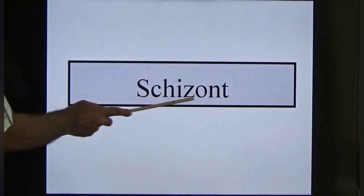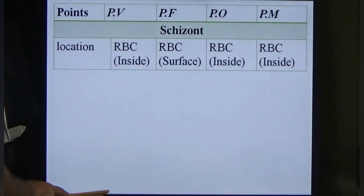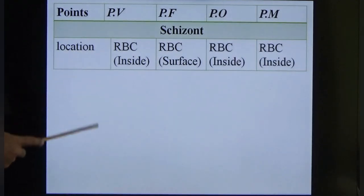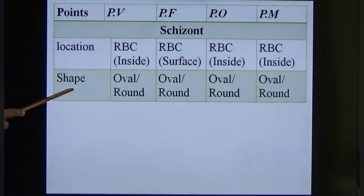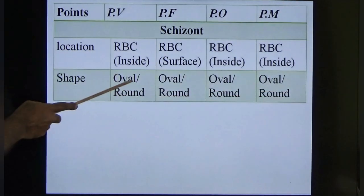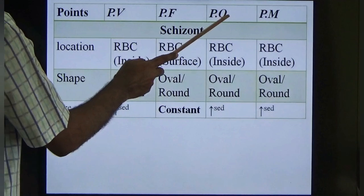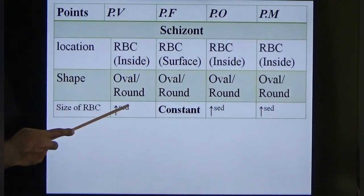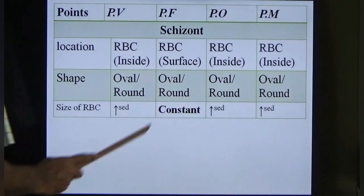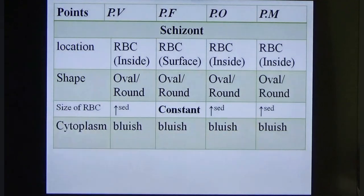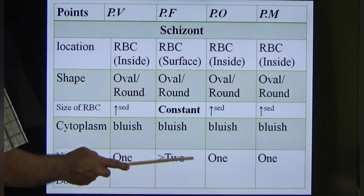Now the schizont. The word meaning of schizont is 'dividing' — the parasites are dividing. Location is the same inside the RBC. Shape is oval or round for all parasites. Size of the RBC increases in vivax, ovale and malariae, but in falciparum the size of the RBC and ring remains constant. Cytoplasm is bluish, and nucleus count remains as before — one in most, more than two in falciparum.